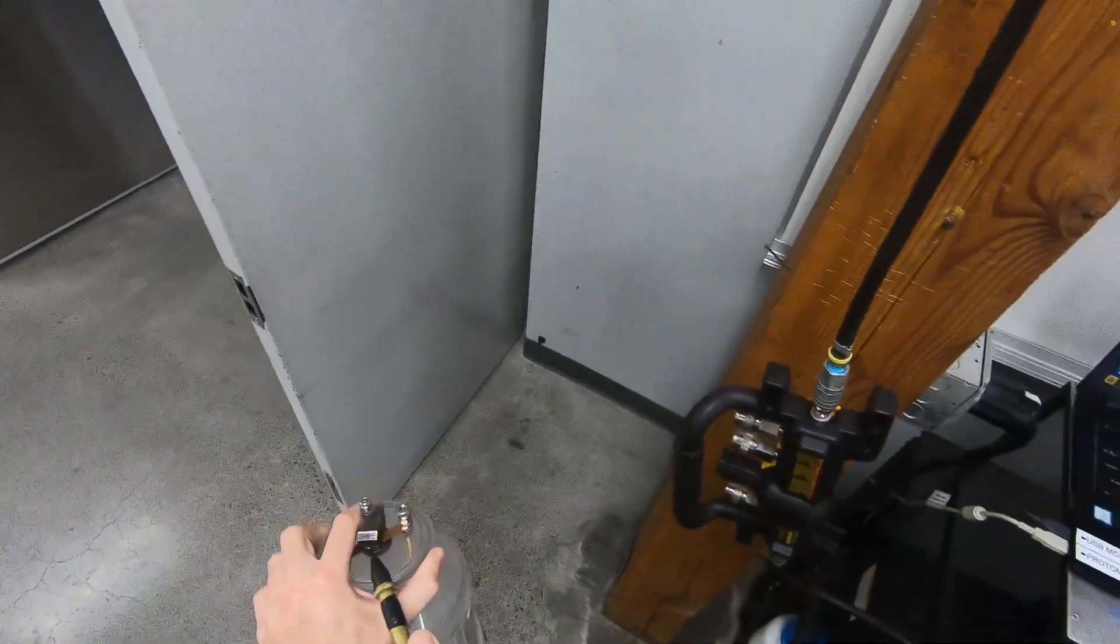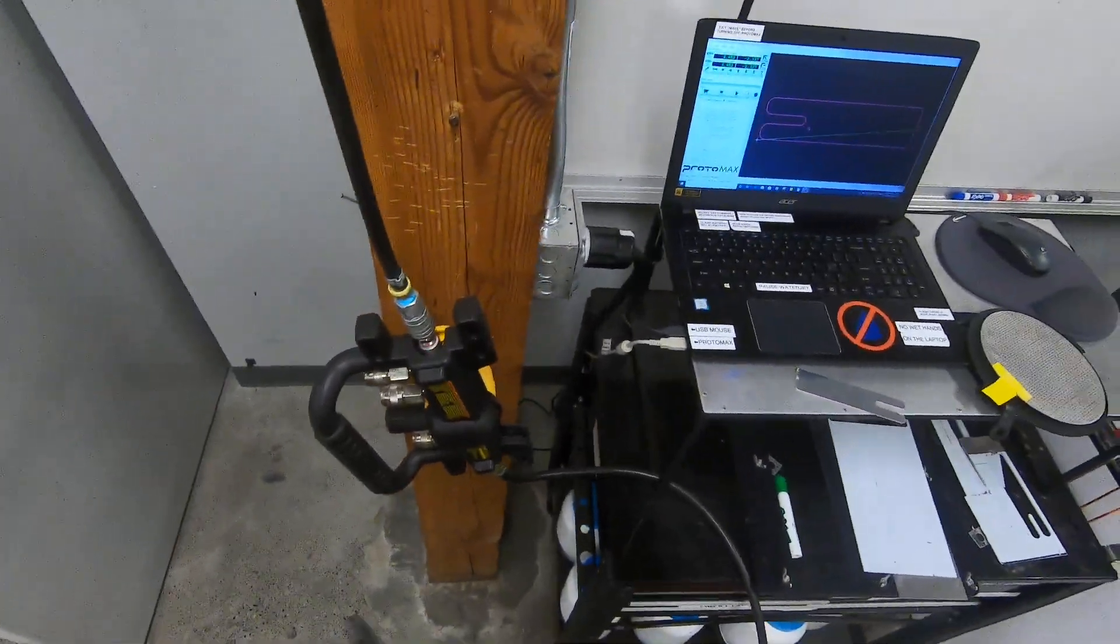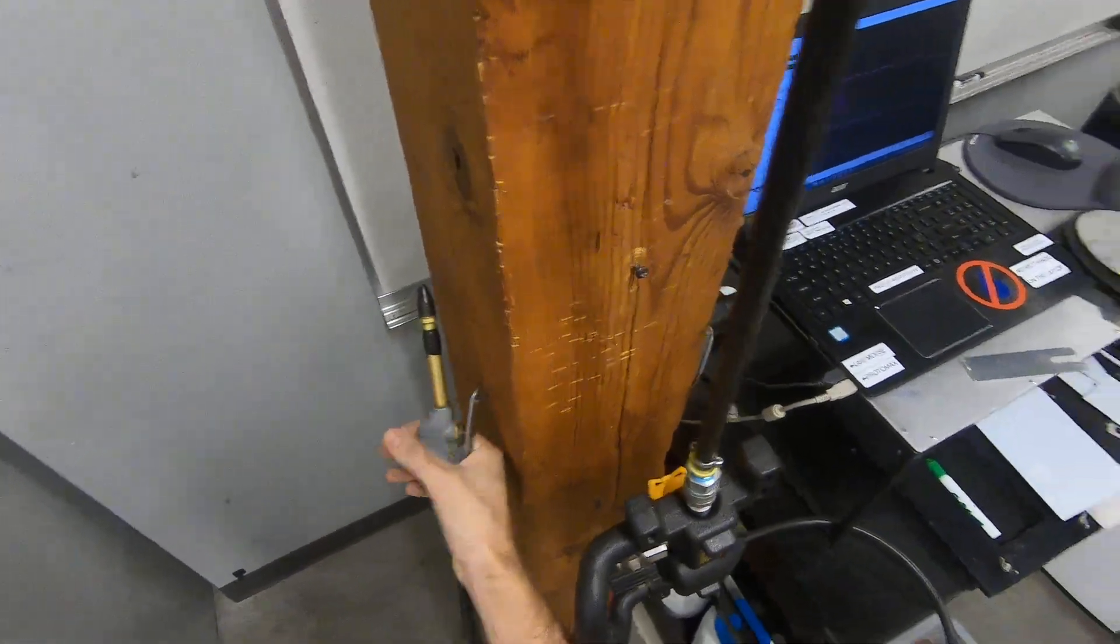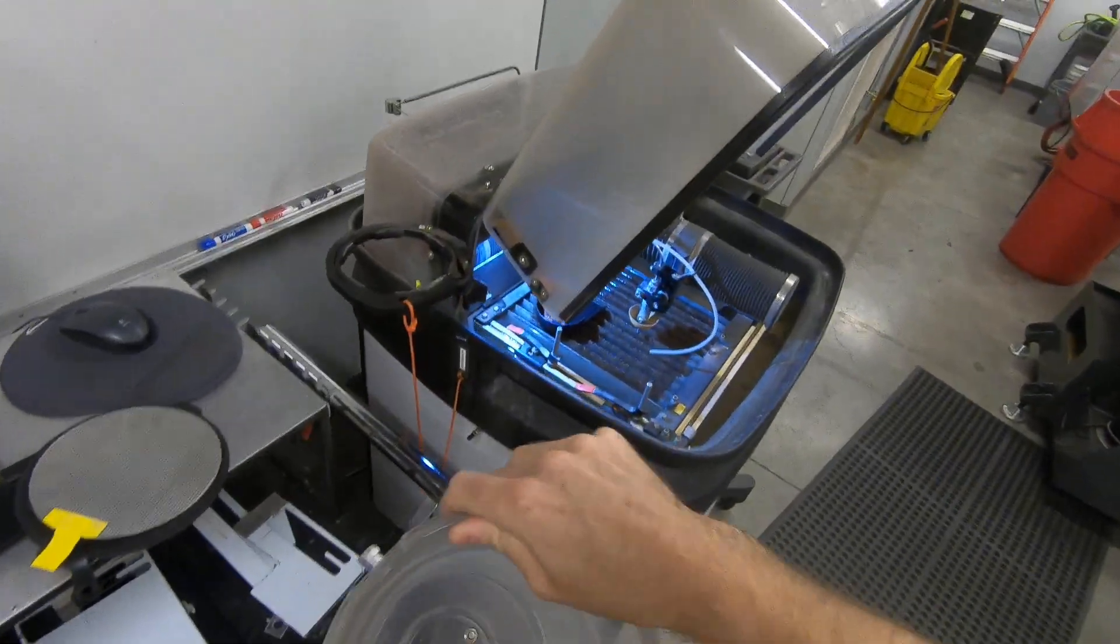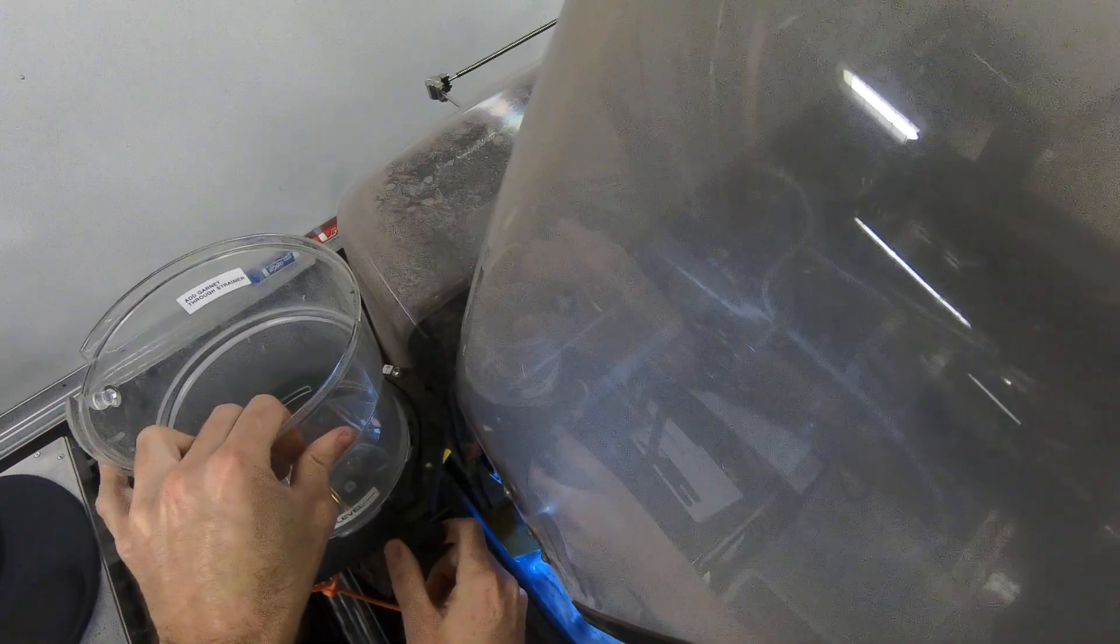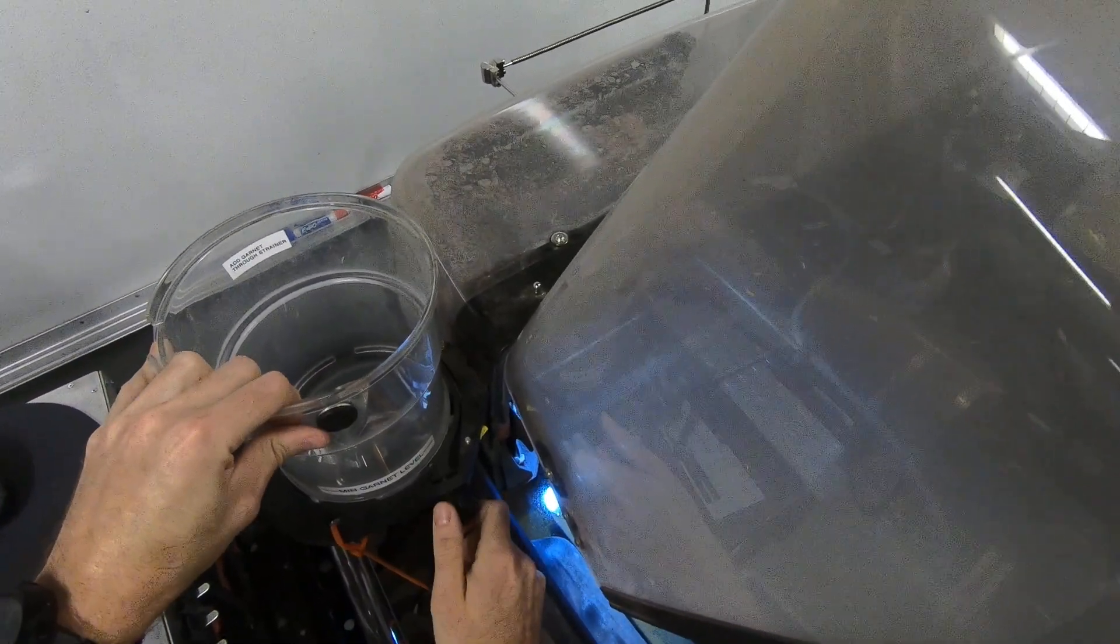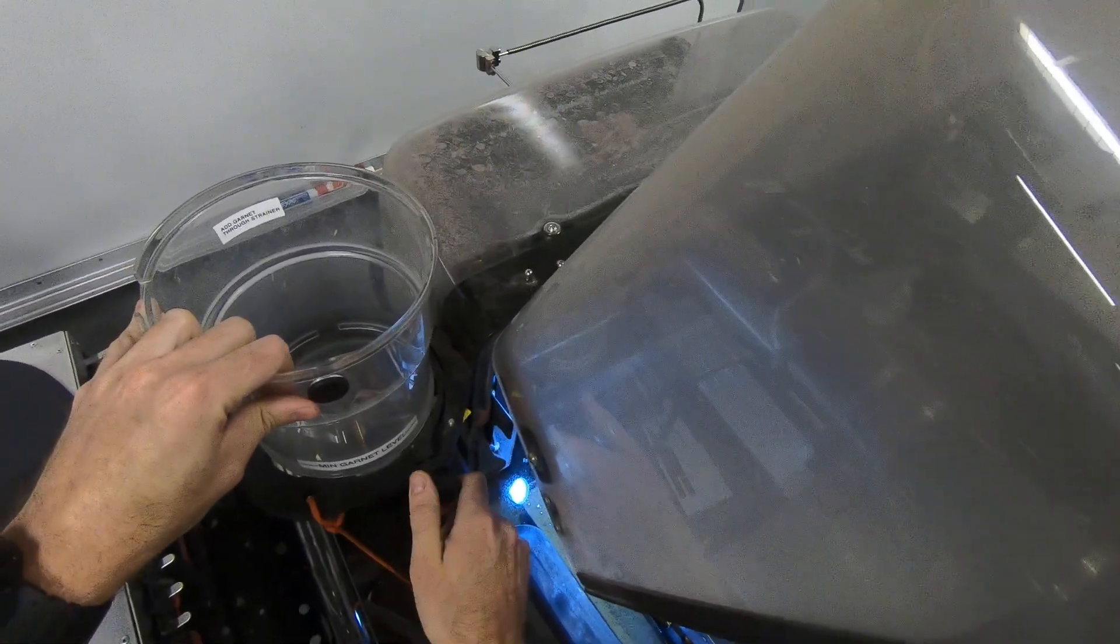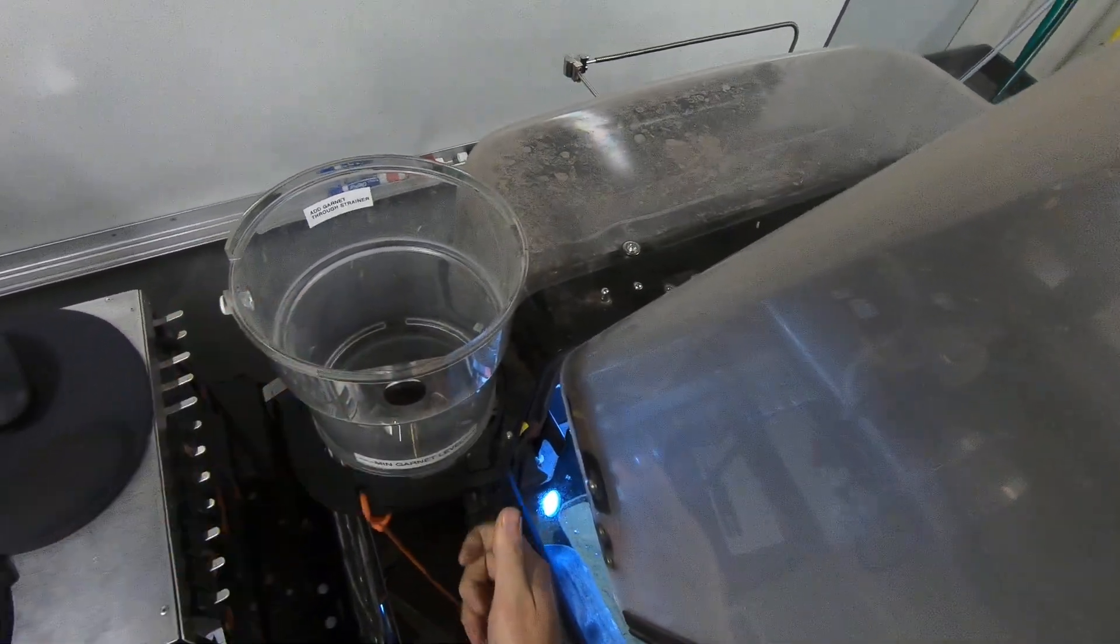Everything needs to be nice and dry. Going to install the hopper back on, making sure the hole is facing the machine. Tighten that back up.